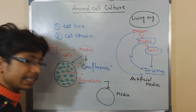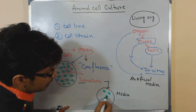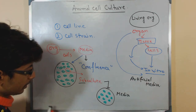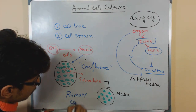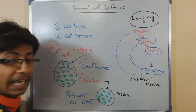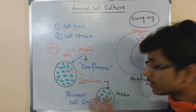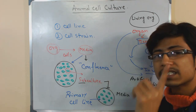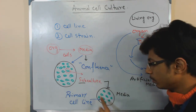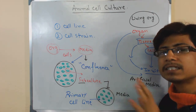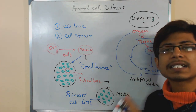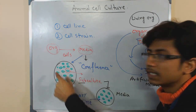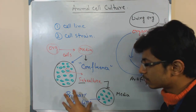Those cells after they grow in the second media are termed as cell line — or primary cell line. Cell line means: once we have done one subculture, the primary cells taken from the organism, after the first subculture, are termed as cell line. Cell line cells are most of the time — 99.9% — similar to the primary cells we took directly from the organism.